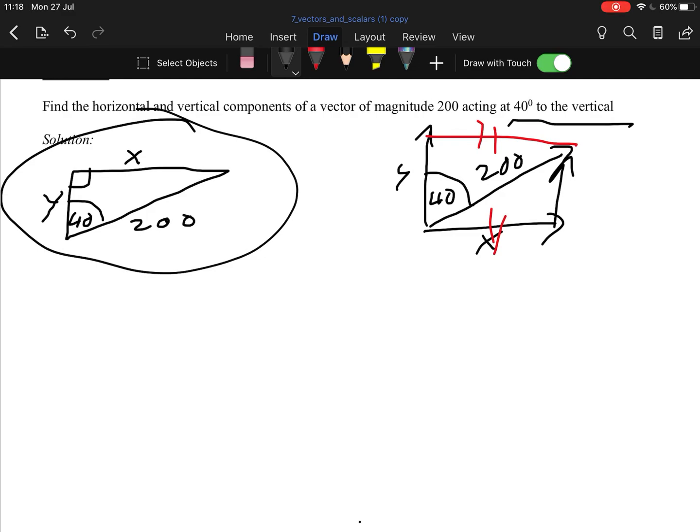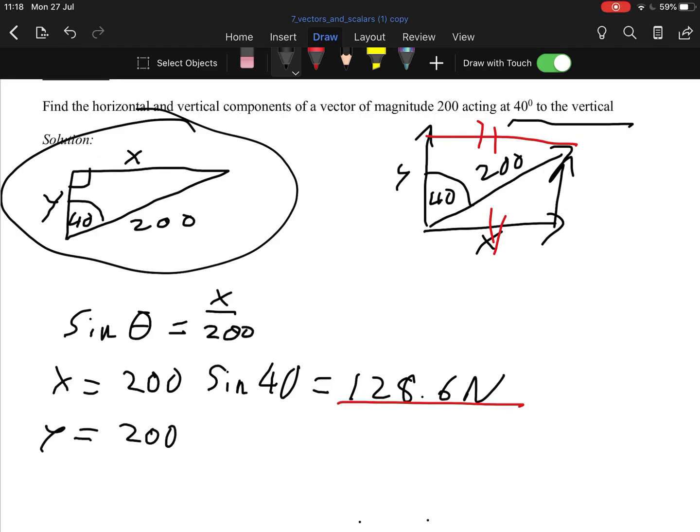Sin, cos, and tan, again. Because what we would say is for x, we would say, well, sin theta is equal to opposite, which is x, over our hypotenuse, which is 200. You see? So x equals 200 sin 40, which gives us 128.6 newtons, which is the exact same as we got earlier.